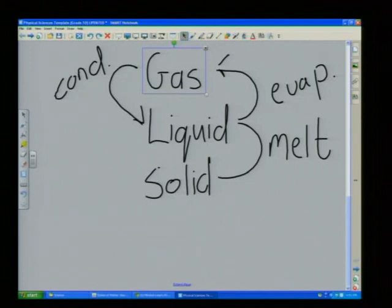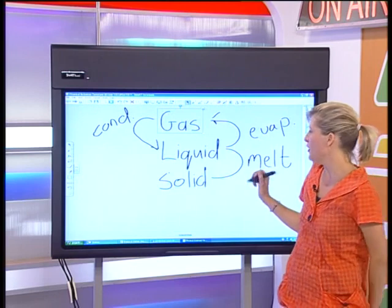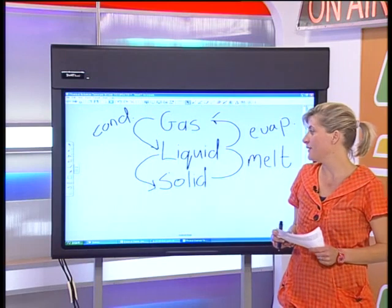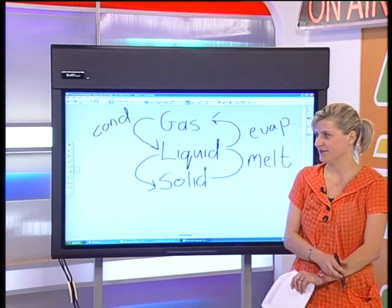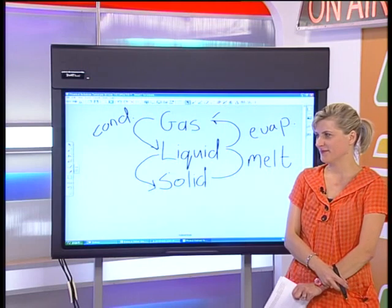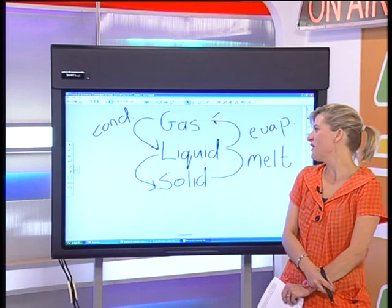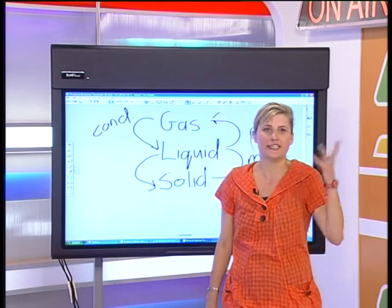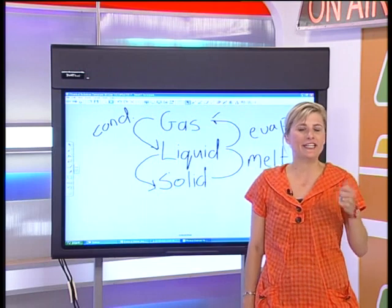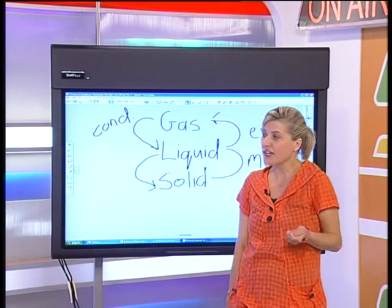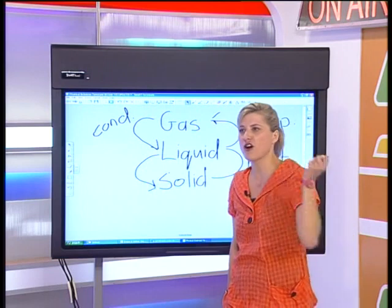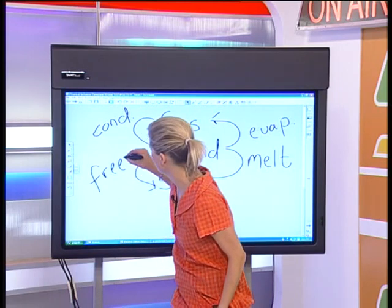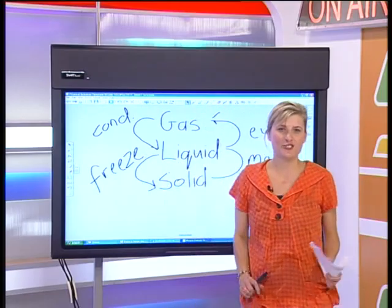Finally, if I go from a liquid to a solid, what do I call that process? Think about it in an everyday situation: if you take the ice tray in your fridge, fill it up with water, and put it in the freezer — what are you doing? You are freezing it. So the process is called freezing. It's actually really simple — no tricks!